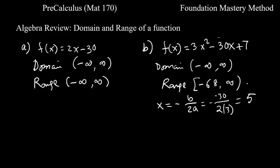What is the y value at 5? It will be c minus b squared over 4a. Our c is 7, b is negative 30, when you square it you get 900 over 4 times a. A is 3 so that's 12. If you simplify this you get negative 68 as we have seen in the calculator, so our range is negative 68 to infinity and we are done.